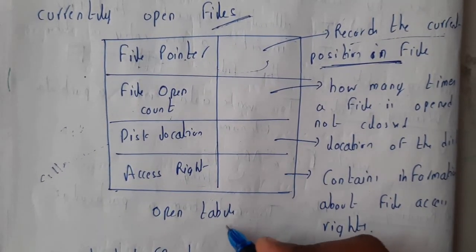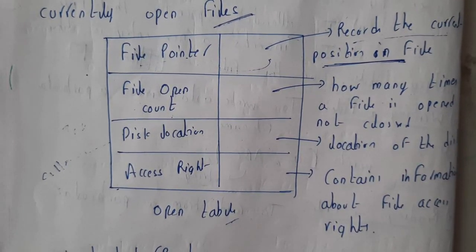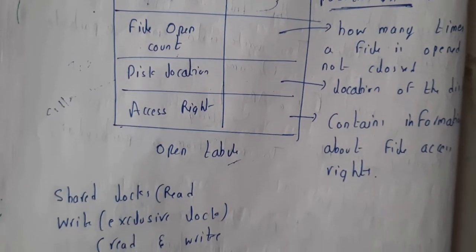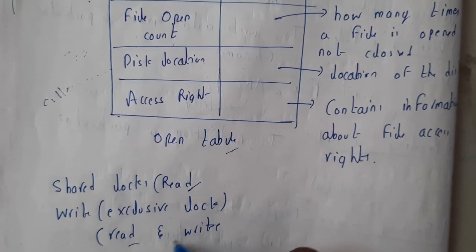So this whole table is your open file table. I hope everyone got a small idea on this. Access rights can be a shared lock, or that is nothing but read, execute, read and write.